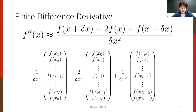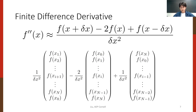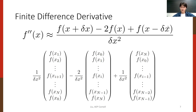An audience member points out the boundary problem: the scheme wraps x_n with x_0, making it periodic. This is actually one of the key challenges the algorithm faces — it is inherently well-suited for periodic boundary conditions, but for other boundary conditions it's not entirely clear how to do it efficiently. We'll talk about that later.